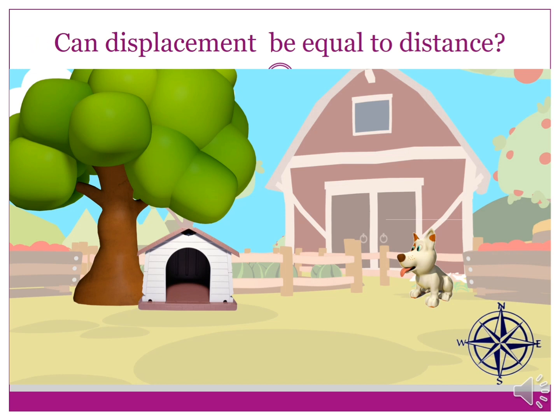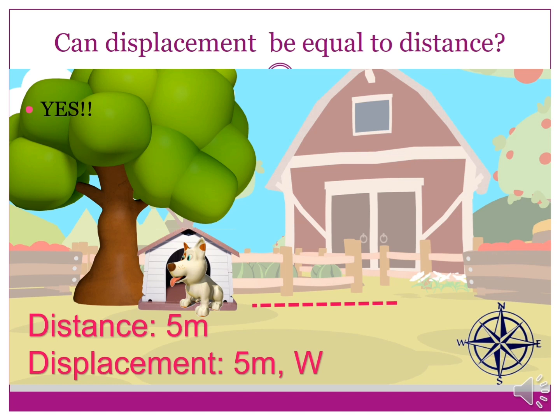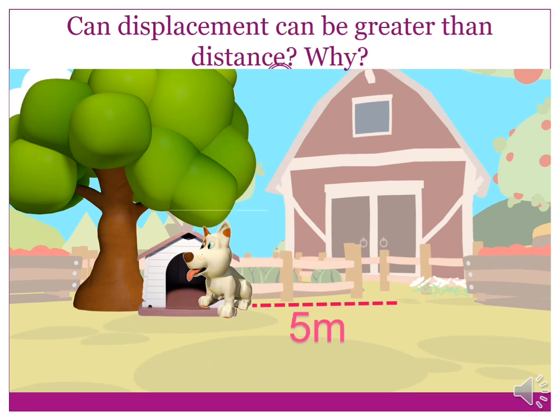Let us now proceed to the question and answer portion. Can displacement be equal to distance? Yes, that is correct. This happens when the path is traveled in a straight line. For example, distance is 5 meters and displacement is 5 meters west. Another question: can displacement be greater than distance? The answer is no. It can be shorter, but it cannot be greater than the distance.